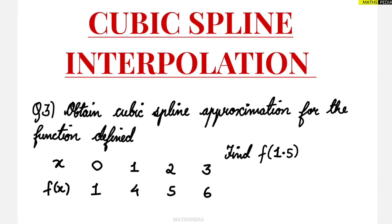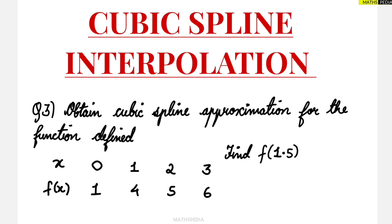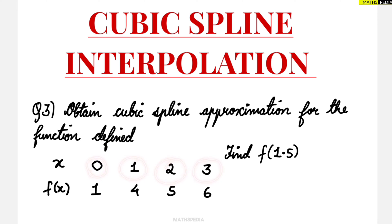In this video we are going to take up the third problem of cubic spline interpolation. We need to obtain the cubic spline approximation for the following defined function. Here we have taken 4 points, and we have to calculate f of 1.5. This is the same procedure we followed in the previous video.